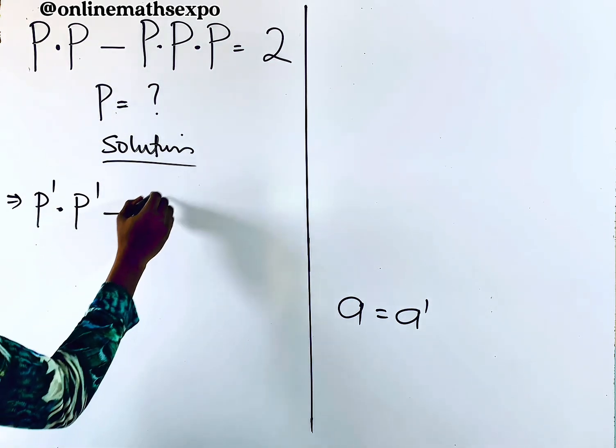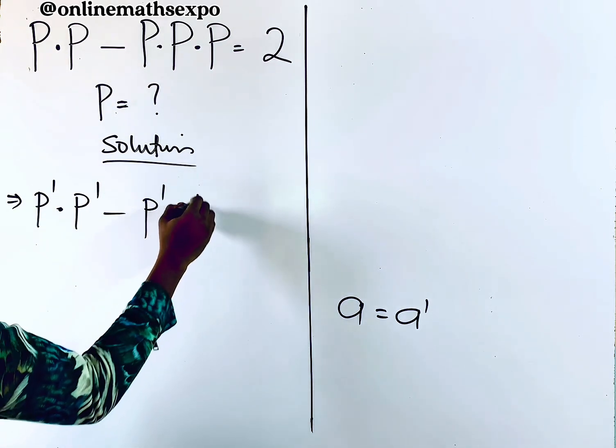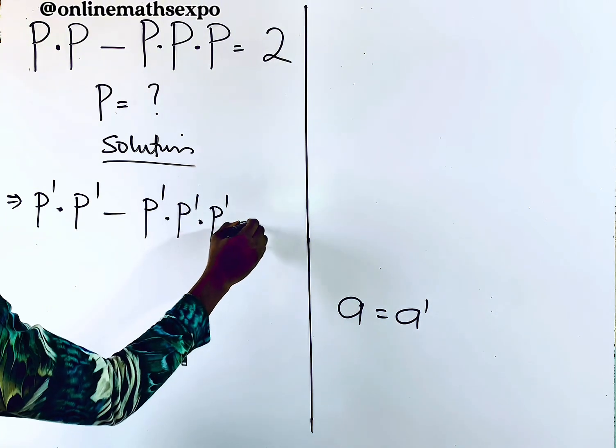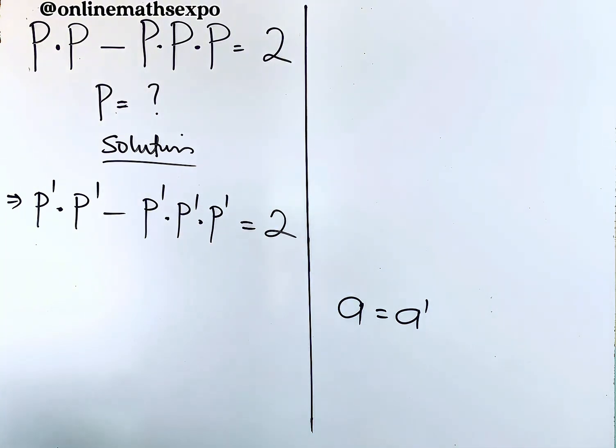...minus p to the power of one multiplied by p to the power of one, and everything is equal to two.